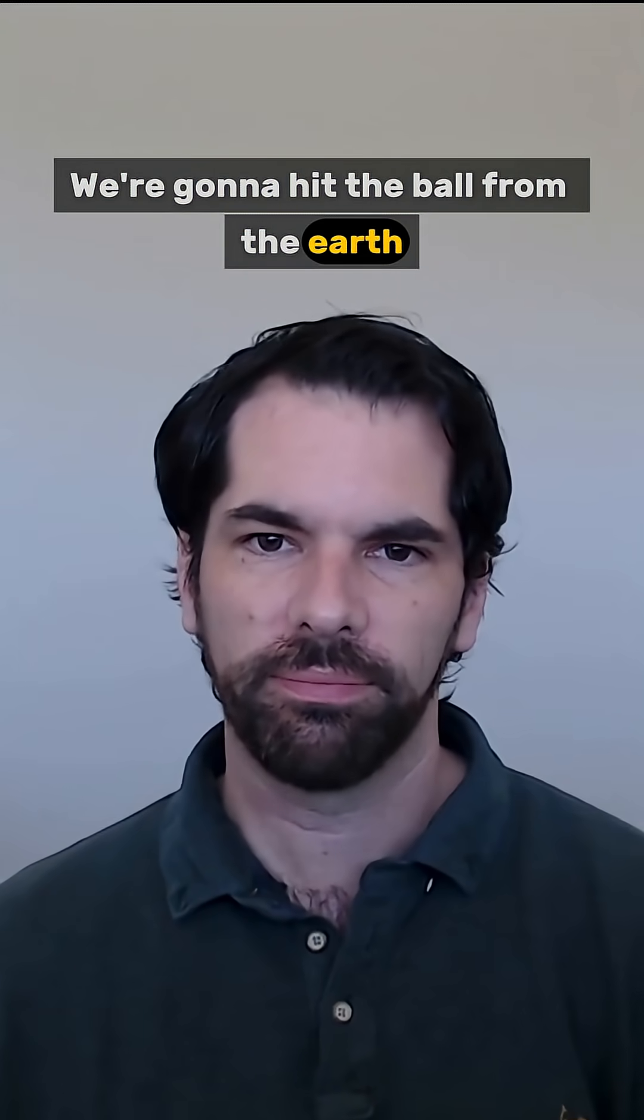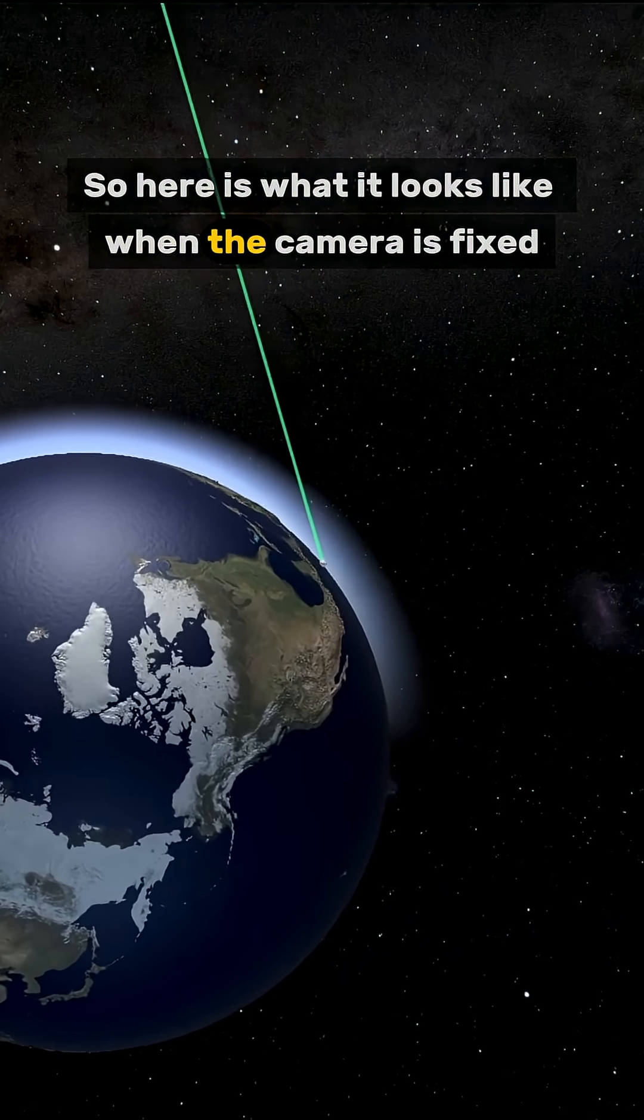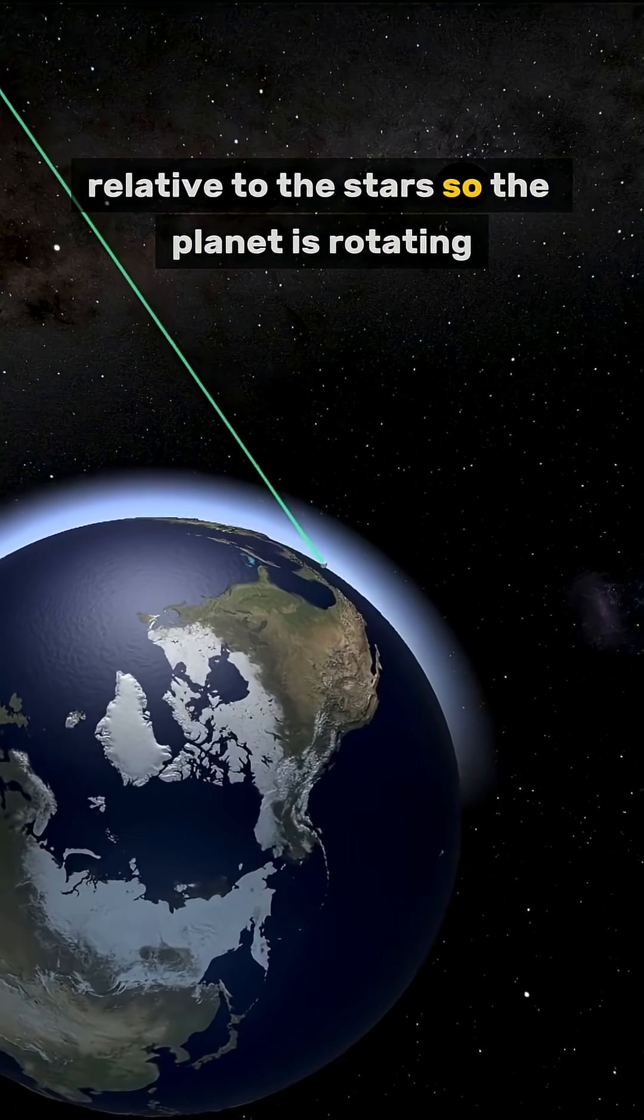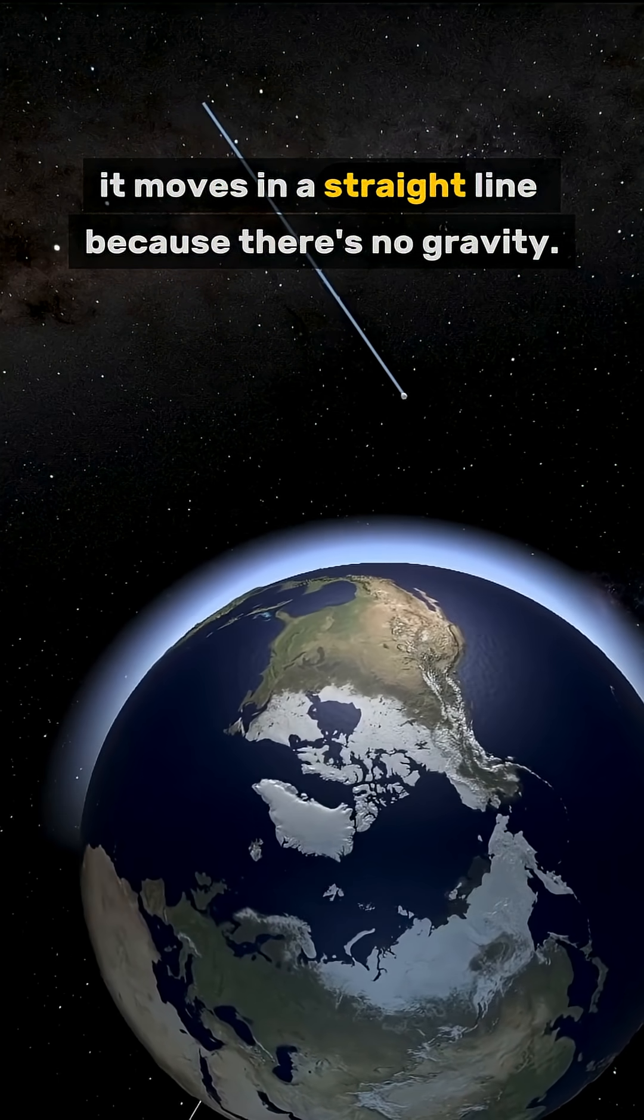We're going to hit the ball from the Earth, and it should move in a straight line because there's no gravity, right? So here is what it looks like when the camera is fixed relative to the stars. The planet is rotating, we hit the ball, and as you would expect, it moves in a straight line because there's no gravity.